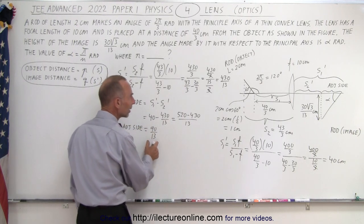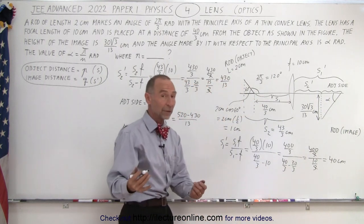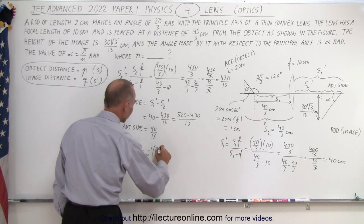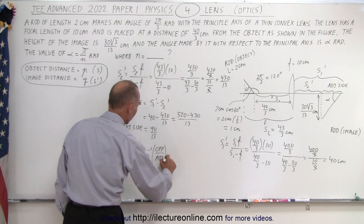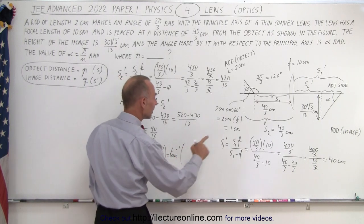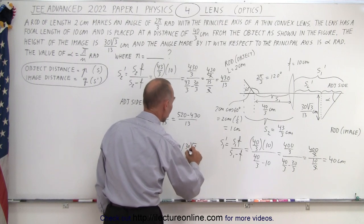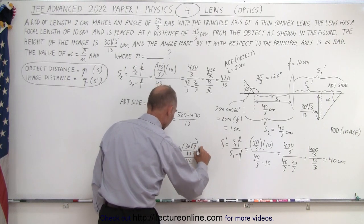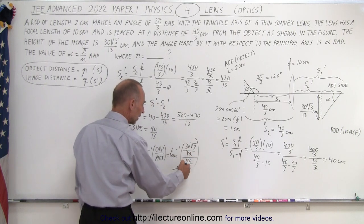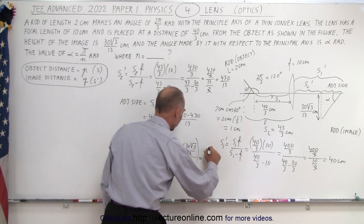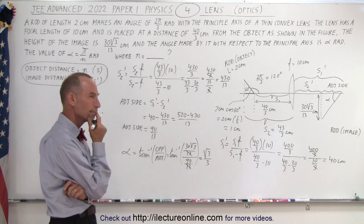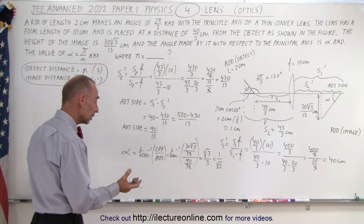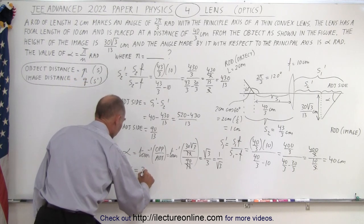We have the adjacent side and the opposite side, so now we can find the angle. Alpha = arctan(opposite/adjacent) = arctan[(30√3/13) / (90/13)]. The over-13s cancel, and 30/90 = 1/3, so this equals arctan(√3/3), which can also be written as arctan(1/√3). Therefore the angle is 30 degrees.